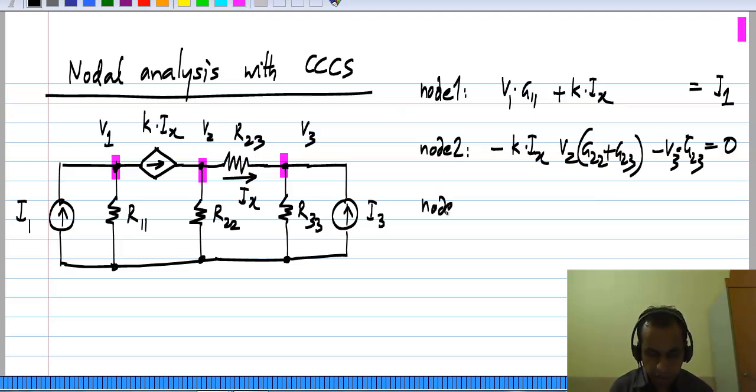And for node 3 nothing has changed; it is the same equation that it always was. We will have minus V_2 G_23 plus V_3 times (G_23 + G_33) to be equal to I_3.